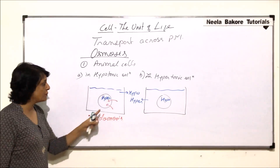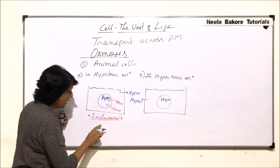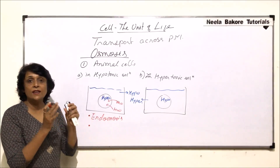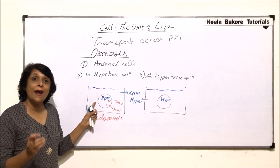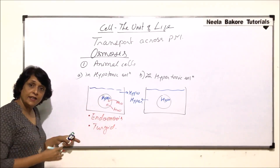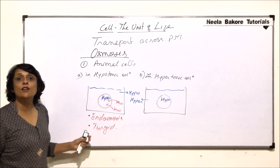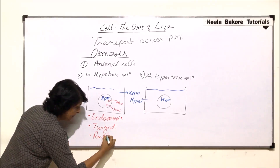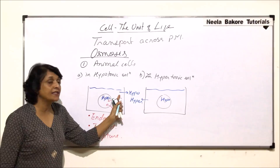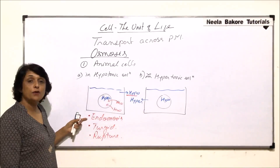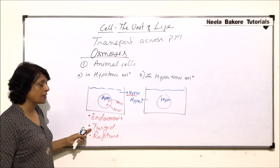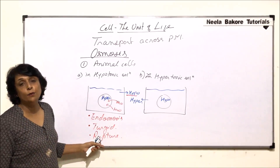Osmosis is taking place and water is going inside the cell, so we call it endosmosis. Water goes into the cell and the process is known as endosmosis. When more and more water goes inside, the cell is going to swell, and when the cell swells due to entry of water, it is known as turgid. If this continues, the cell will swell and ultimately it will rupture. So for an animal cell placed in hypotonic solution: first, endosmosis occurs as water moves from hypo to hyper; the cell becomes turgid; it swells; and finally it ruptures.